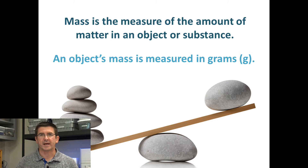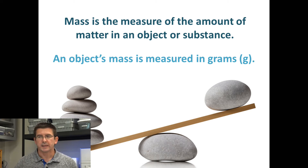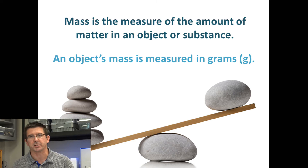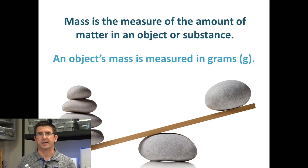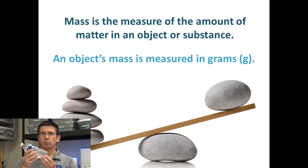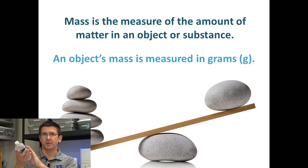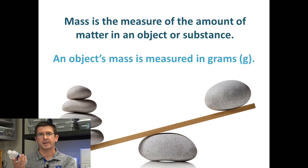The amount of atoms in an object gives it its mass, and we can tell how much mass an object has when we weigh it or when we pick it up. When I pick up this water bottle, I know it has mass because I feel the weight of the bottle pushing down on my hand.